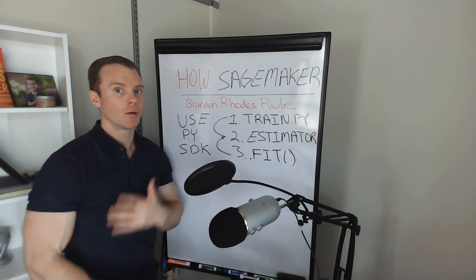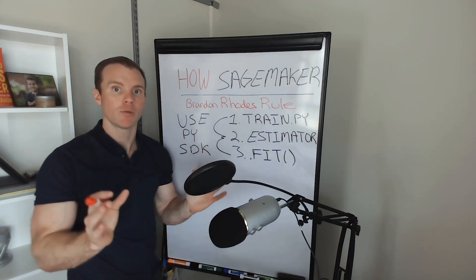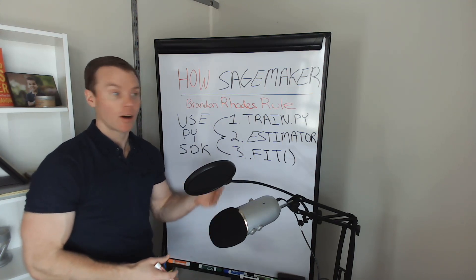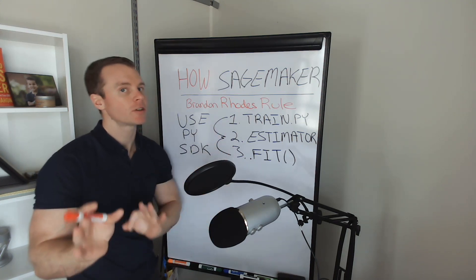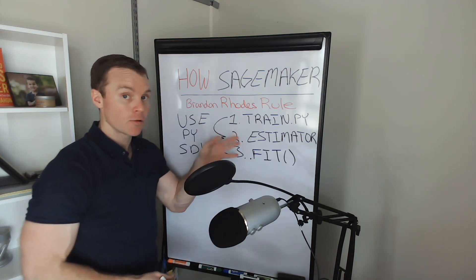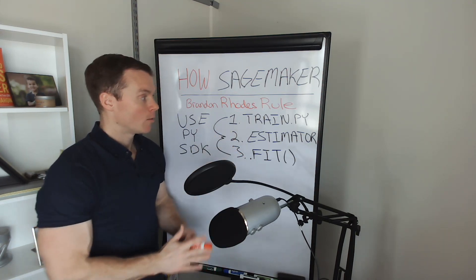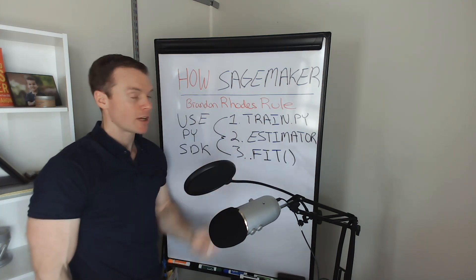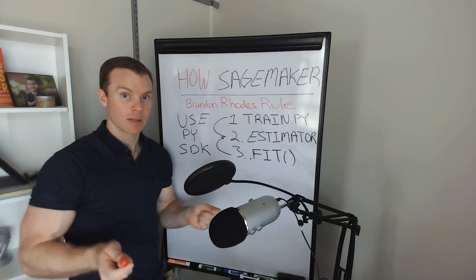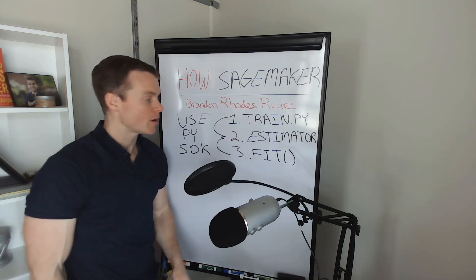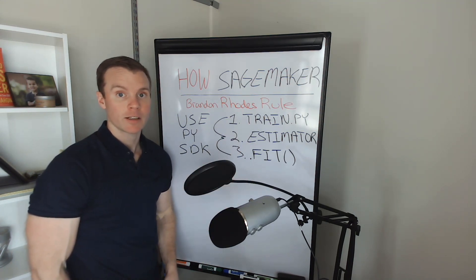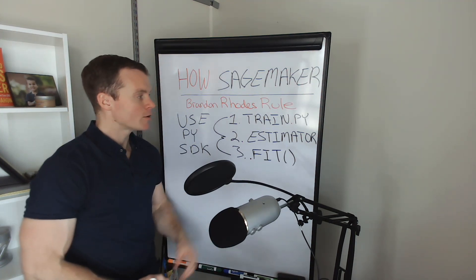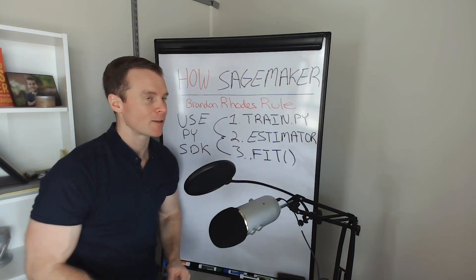This is our entry point. We don't need to go into SageMaker Studio or SageMaker Notebook — we just need to install the Python SDK. We essentially need to do three things to actually train a model. We'll write a script called train.py — our actual model training script. We'll tell SageMaker we want to instantiate a SageMaker estimator, which will take our train script. And then we'll call fit on that estimator, just like we would with a scikit-learn estimator or a TensorFlow model. We'll get into examples and demos of this.